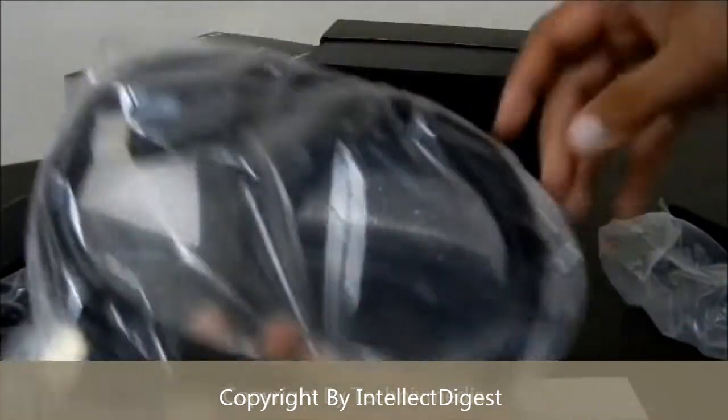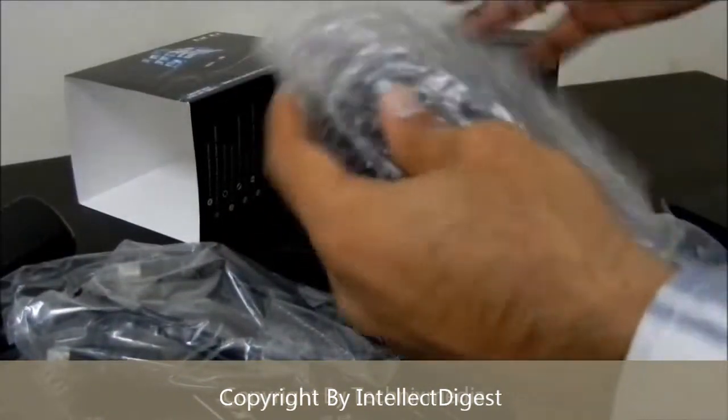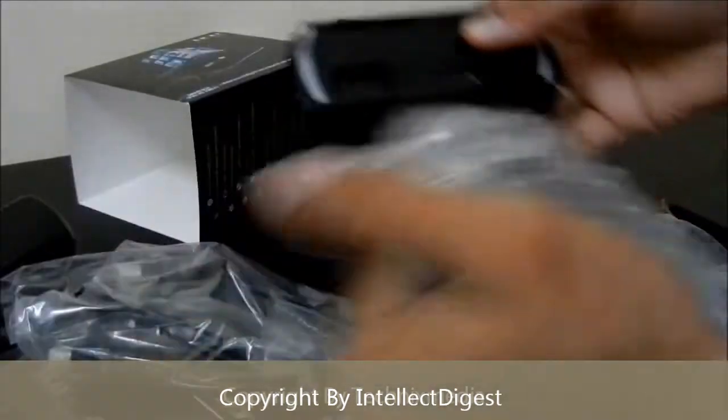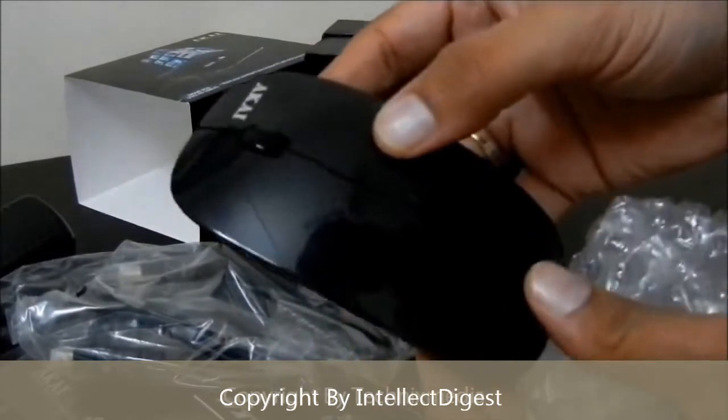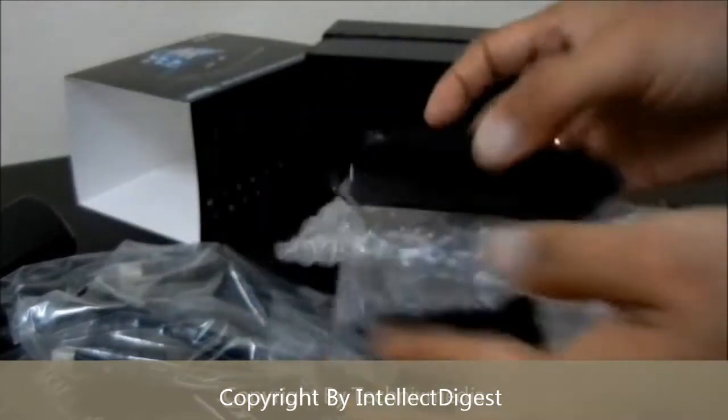Here you get a good quality HDMI cable. And in the last you get a very sleek looking Akai wireless mouse. This is all in the box. We will show you a detailed review in another video. Thanks for watching.